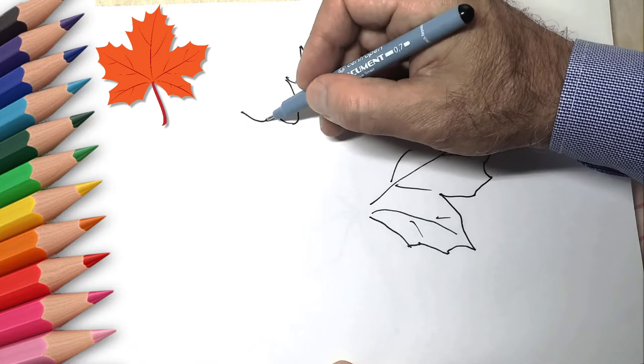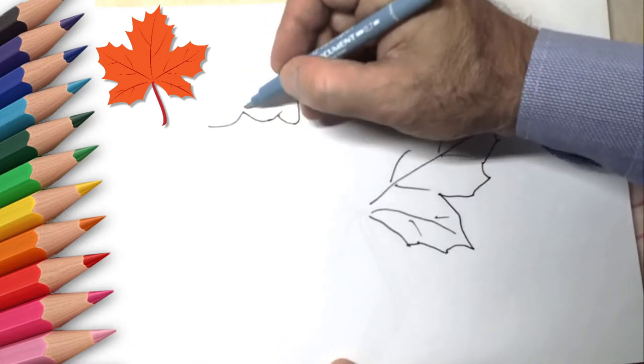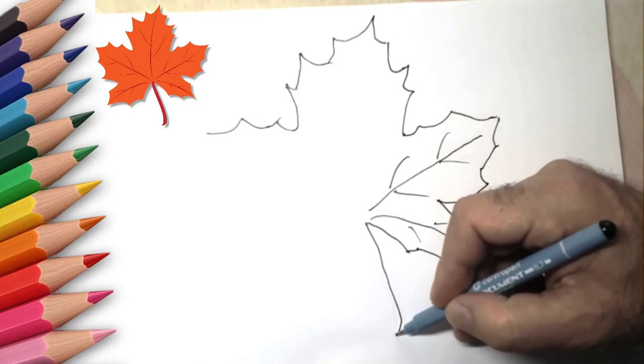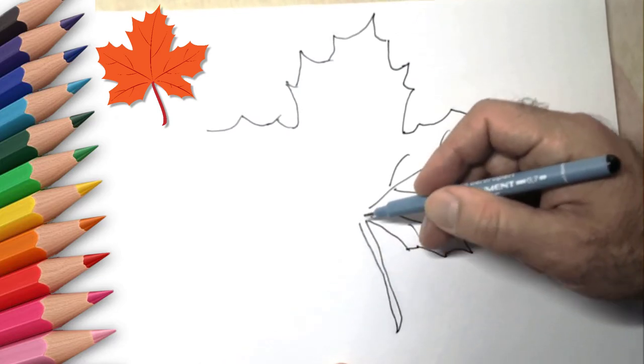Draw each part of the leaf separately. At the same time, draw the whole leaf, moving from part to part. We drew the outline of the leaf.